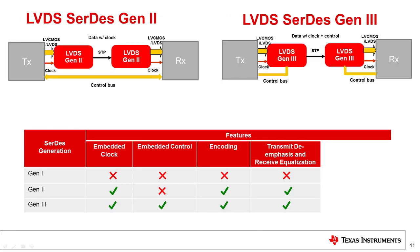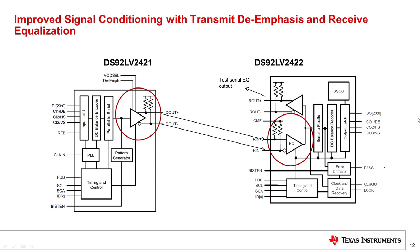Another benefit of Gen 2 and Gen 3 devices is improved signal conditioning with transmit de-emphasis and receive equalization. Here's an example of a SERDES chipset that illustrates these features. The serializer has transmit de-emphasis and the deserializer has an equalizer, which includes a test point for testing the equalized signal before deserializing it. On the transmit side, de-emphasis de-emphasizes the low frequency content of the signal, because a cable acts like a low-pass filter and the signal's high frequency content gets attenuated. So if you de-emphasize the low frequency content on transmit, when you get to the receiver it balances out and you can still identify transitions. On the receive side, equalization further manipulates the signal to compensate for losses, and the receiver can still receive a good representation of the original transmitted signal.